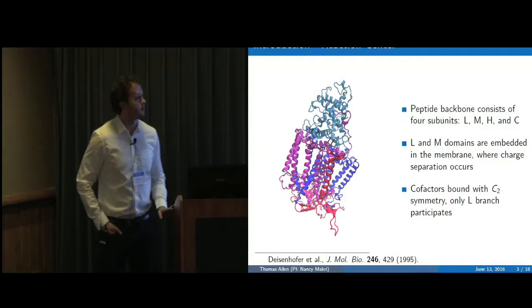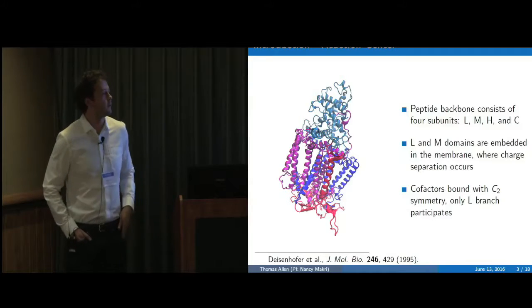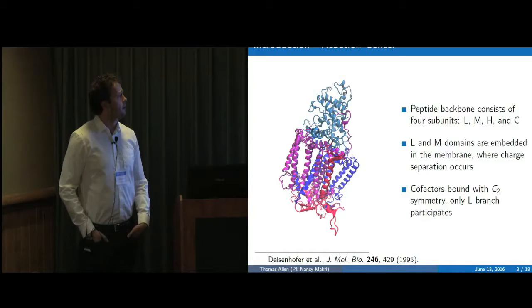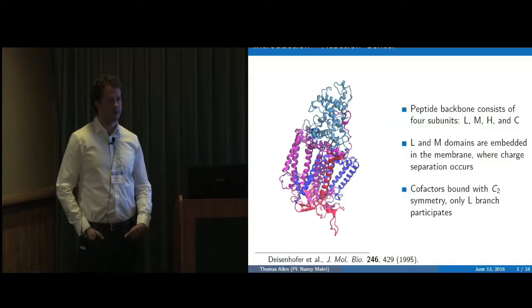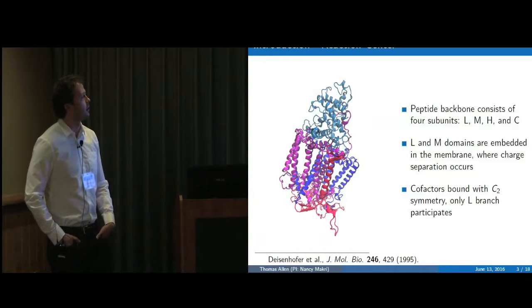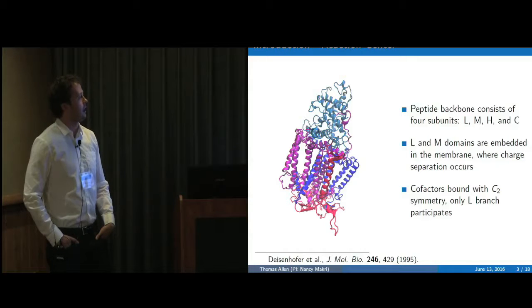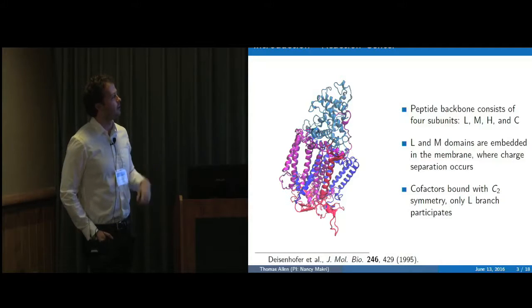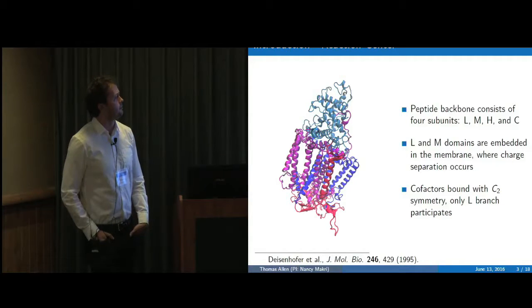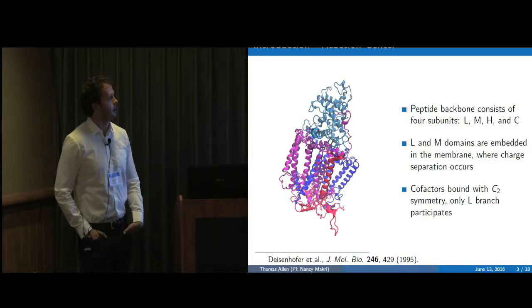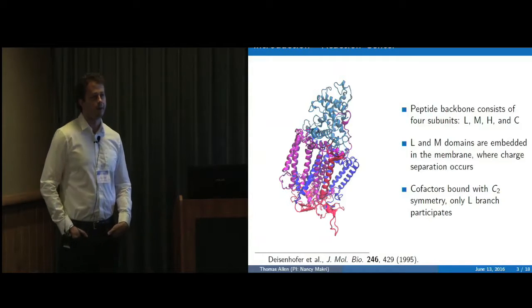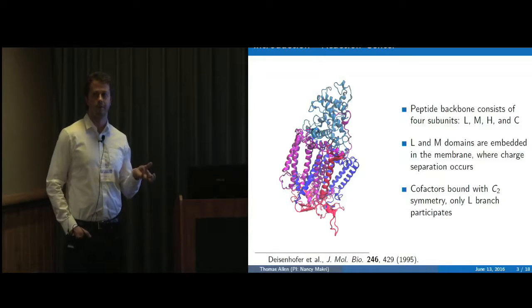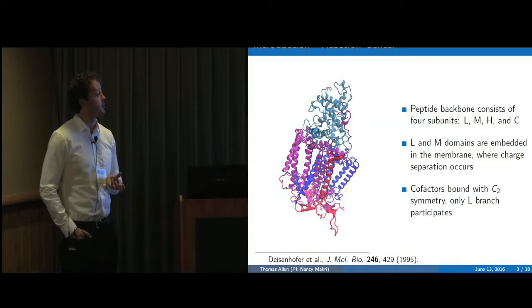So what we're working with here is the reaction center itself, this is the protein backbone. I just want to give you a little bit of an introduction to it. Basically it consists of four subunits, there's a cytochrome up top, which is in the light blue. And then there's L, M and H units which contain the transmembrane helices. Basically all the interesting stuff happens in the L and the M domains. That's where all the cofactors are located and that's where the actual electron transfer, the initial charge excitation of the special pair happens.